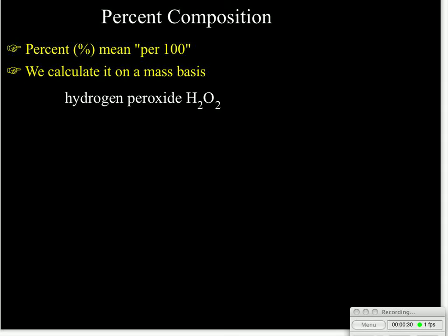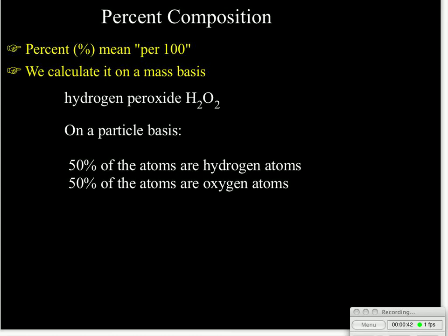For example, if we look at hydrogen peroxide, H2O2, if we were just to look at the atoms, the particles that make up that compound, we would look at it and say the hydrogen there's two and the oxygen there's two, so on a particle basis half the atoms are hydrogen or 50% of the atoms are hydrogen and 50% are oxygen atoms. But for this type of problem, we're not really concerned with it on a particle basis.